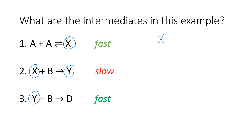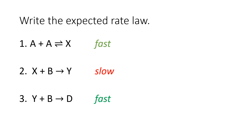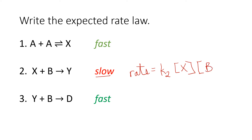Now, we could look at that slow step and write the expected rate law. The expected rate law is: rate equals k2 — referring to the second equation — with our two reactants in the second equation: concentration of X and concentration of B.